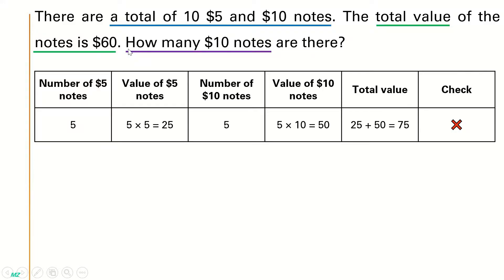Before we move on to our next guess, from here you can see that we need to drop the total value by $15. This means that because we know that each $5 note is $5 less than each $10 note, we need to have 3 more $5 notes and 3 fewer $10 notes.